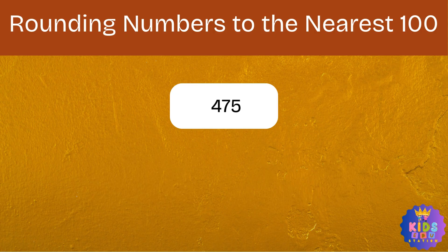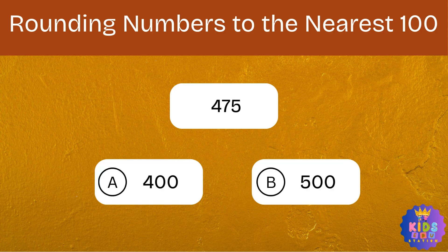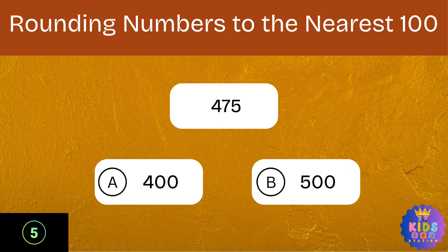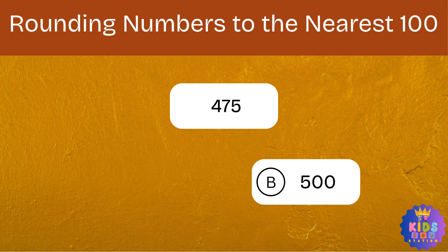Round 475 to the nearest hundred. Option A: 400. Option B: 500. And the correct answer is 500.